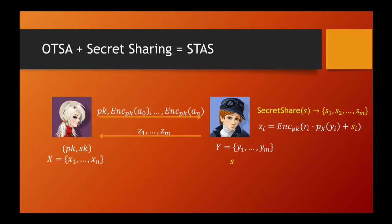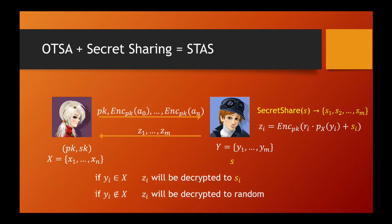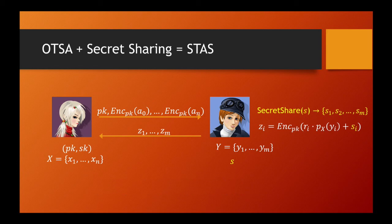To construct STAS, we illustrate using our OTSA based on oblivious polynomial evaluation. The sender splits the secret S under some access structure and uses the resulting set of shares as data atoms in OTSA. If a particular sender index Yi is also in the receiver's index set, then the receiver gets the corresponding secret share Si; otherwise, it receives a random value.